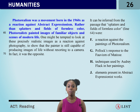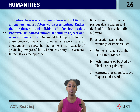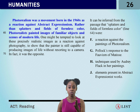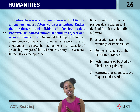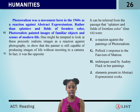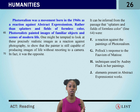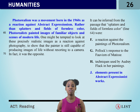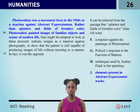Let's look at J: Elements present in abstract expressionist works. Going back to those first two sentences — photorealism was a movement born in the 1960s as a reaction against abstract expressionism. Rather than splatters and fields of formless color, photorealists painted images of familiar objects and scenes of modern life. Splatters and fields of formless color represent the elements present in abstract expressionism. So J is our answer. Let's go back to the professor.